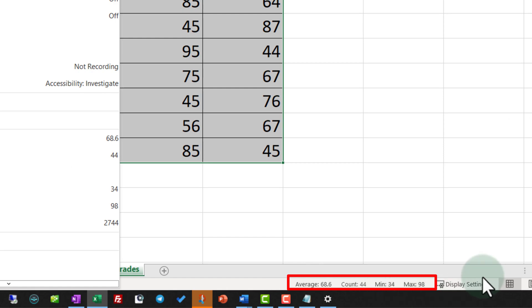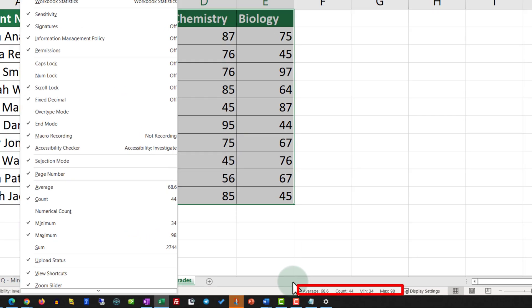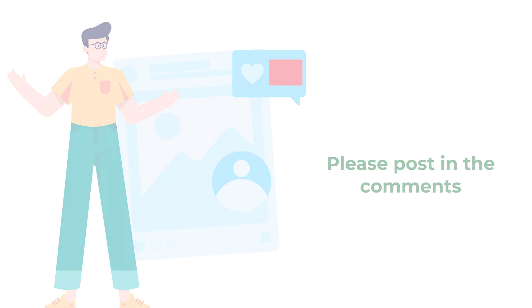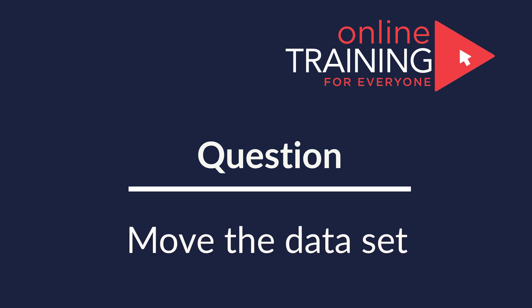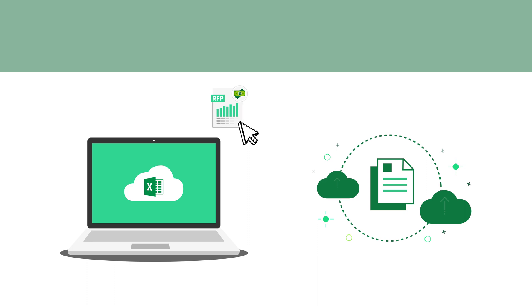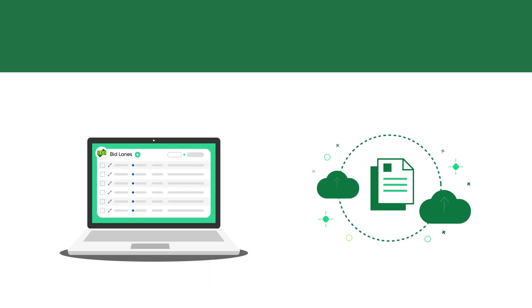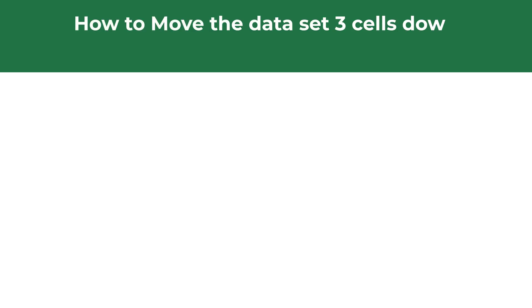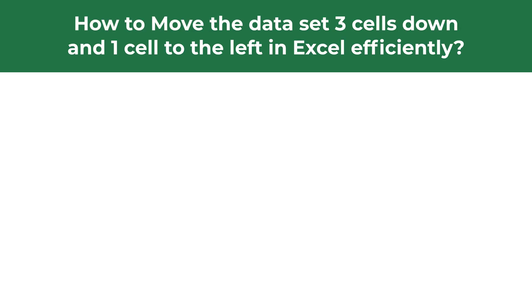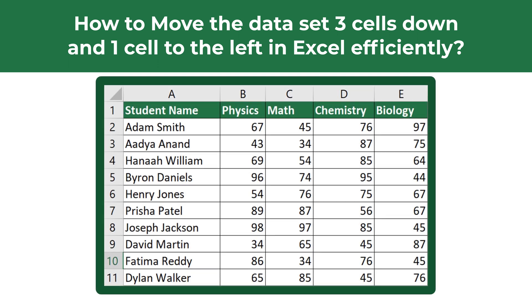You will see that all these values now show on the status bar. Do you have an alternative way to solve it? Please make sure to post it in comments. A lot of times you might be presented with a question that tests your knowledge of the Microsoft Excel user interface. Let's look at a sample question from the recent test: how to move a data set three cells down and one cell to the left in Microsoft Excel efficiently.